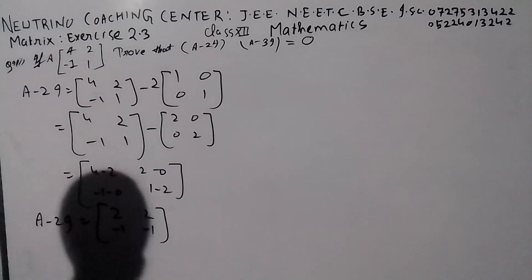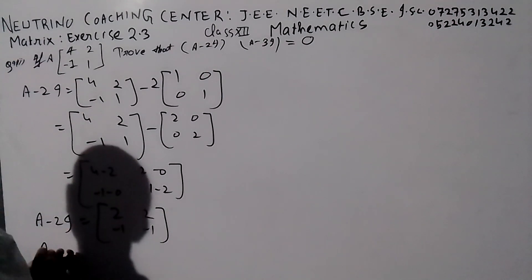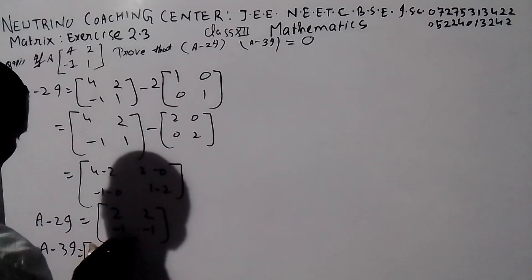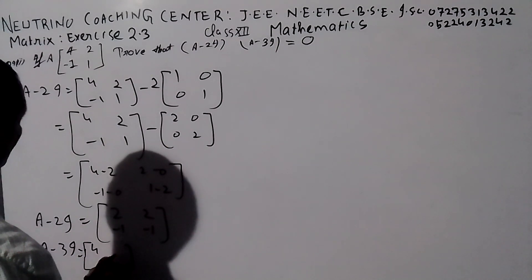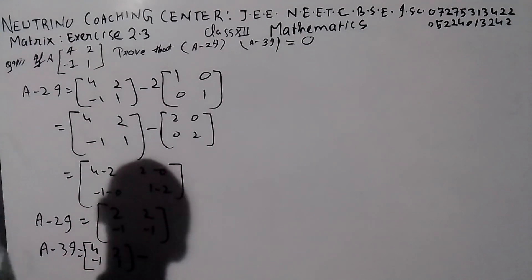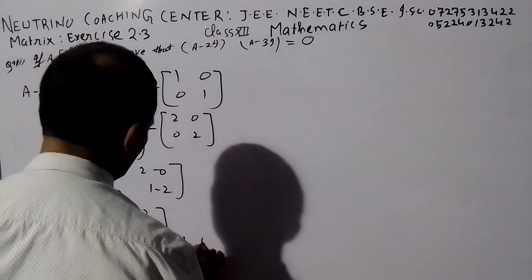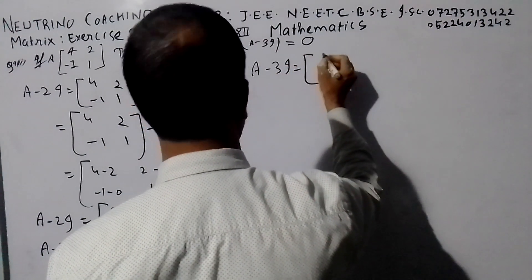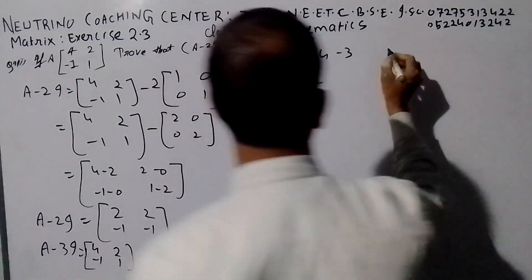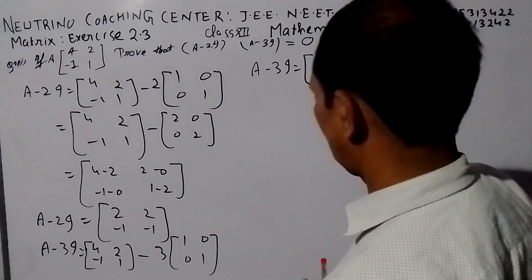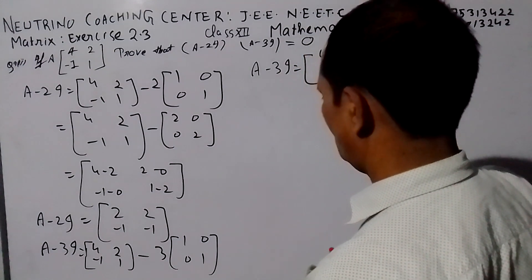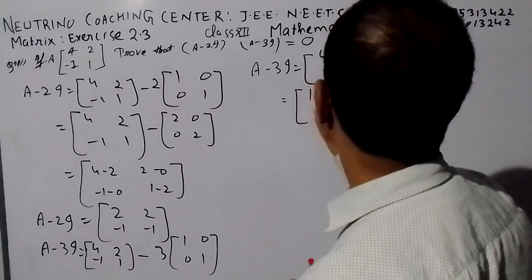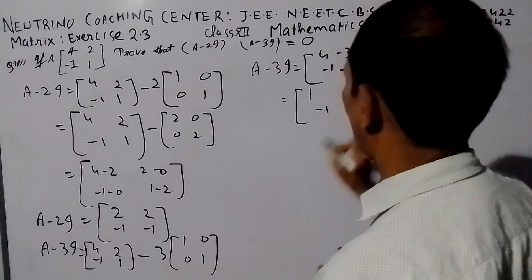Now A minus 3I — we call it A minus 3I. A minus 3I is equal to four. A is equal to four: two, minus one, one; three, one, zero; zero — okay. A minus 3I: minus three, two minus zero, minus one minus zero, one minus three. One, one, two, one, two, minus one, one.